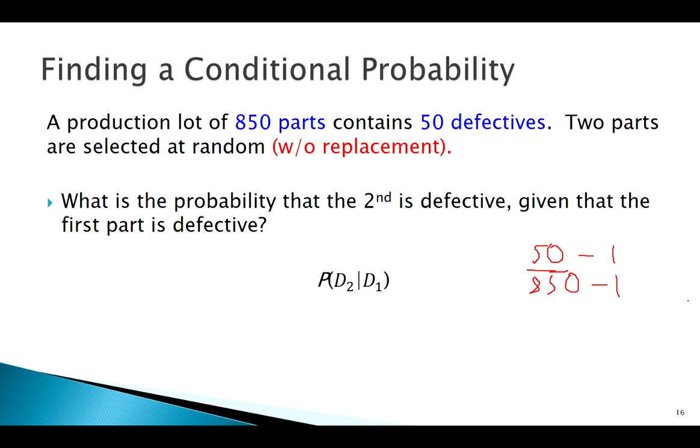That one also happened to be defective, so to find a conditional probability I need to update what I know has already happened. Take one off my numerator and denominator - that would be my conditional probability. Let's apply these conditional probabilities to our multiplication rule.